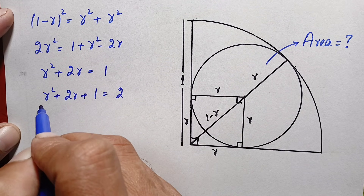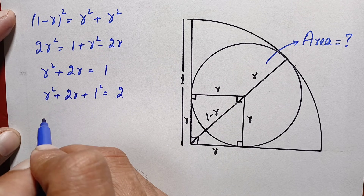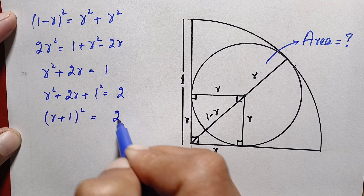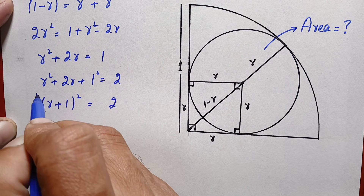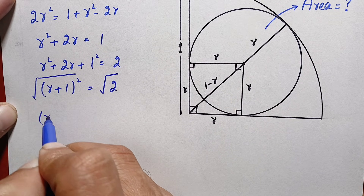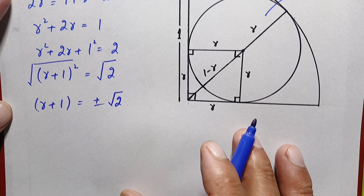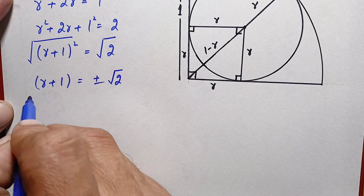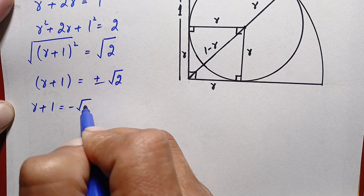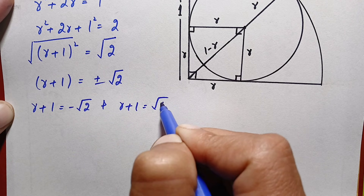Looking at the left hand side, this matches the algebraic identity a² + 2ab + b², so the left hand side becomes (r + 1)² = 2. We take the square root on both sides to eliminate the square, giving r + 1 = ±√2. So we have two values: r + 1 = −√2 and r + 1 = +√2.